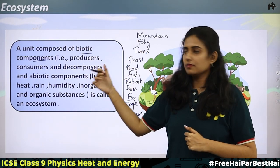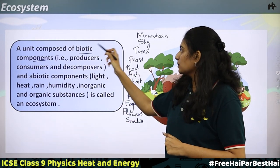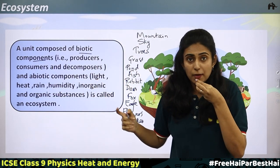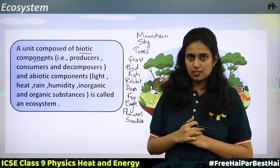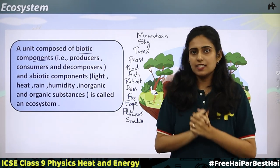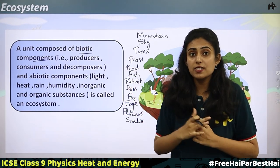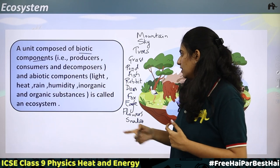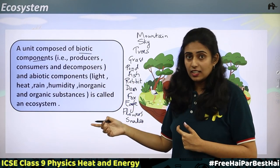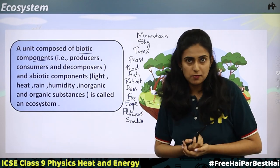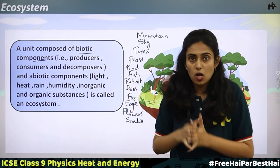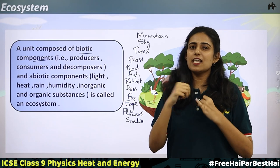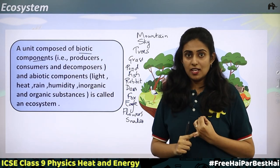An ecosystem includes biotic components — producers, consumers — and when you take plants, you are a consumer. Then there are decomposers: once after death, a body gets decomposed by bacteria and microorganisms, which are the decomposers. The abiotic components — that is non-living: light, heat, rain, humidity, inorganic and organic substances — together with the biotic components is called an ecosystem. Examples: an aquarium is an ecosystem, a garden is an ecosystem.